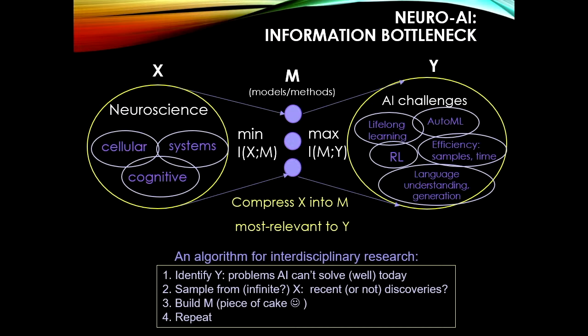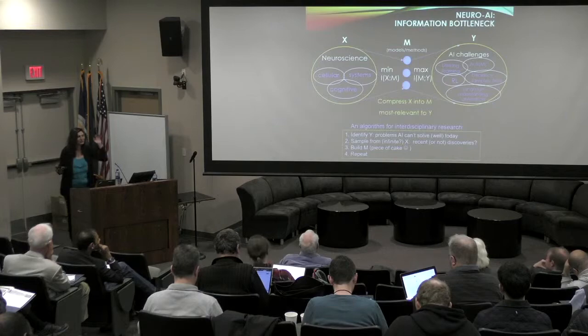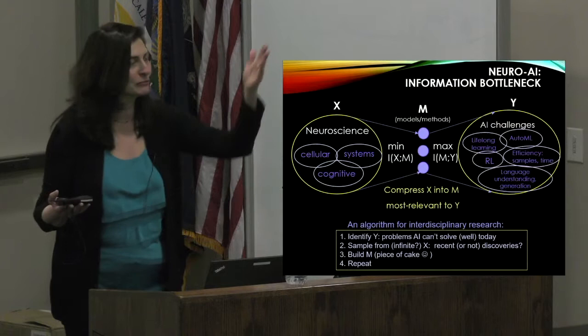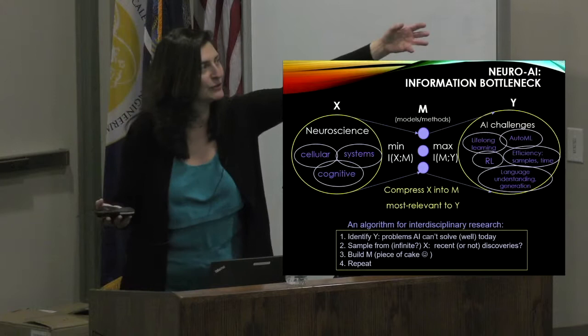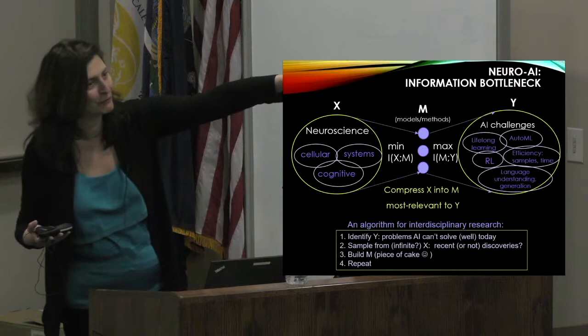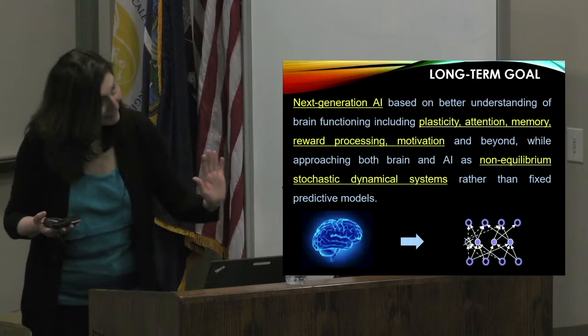The question is: how do you know what to extract from the vast ocean of neuroscience knowledge, spanning cellular neuroscience, systems neuroscience, and cognitive neuroscience? Neuroscience itself isn't like physics with clearly defined laws — it's complex. I suggest thinking about it as an information bottleneck: if you identify a particular AI challenge — lifelong learning, AutoML, sample efficiency, reinforcement learning, language understanding — you can compress out the relevant aspects of neuroscience for that specific problem.